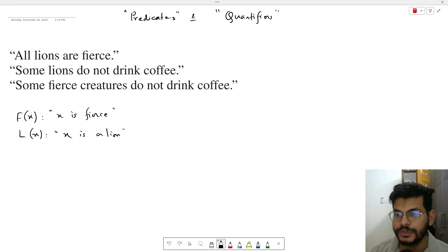So we use this predicate. All lions are fierce - this uses a universal quantifier. X is lion implies X is fierce.